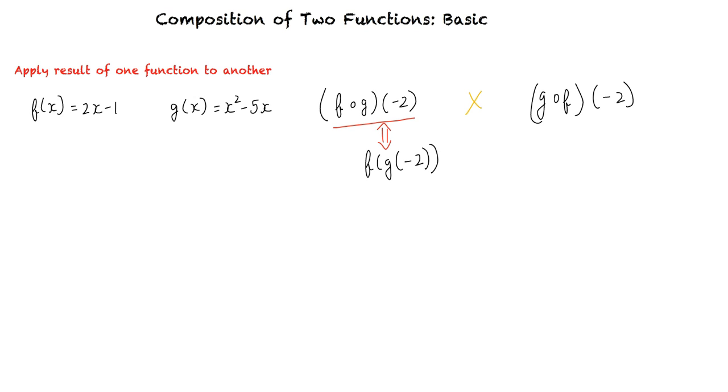However, g(f(-2)) means the opposite. We first set x = -2 in f(x) and apply the result of the f function in the g function.